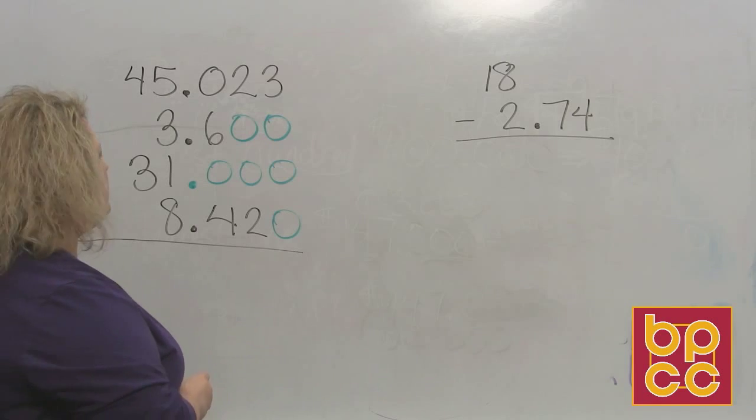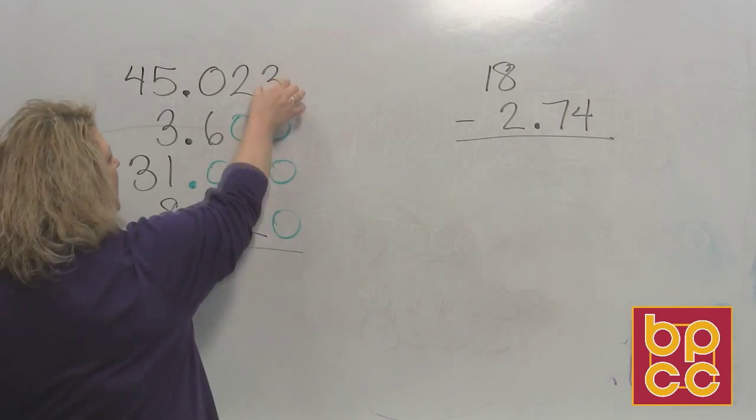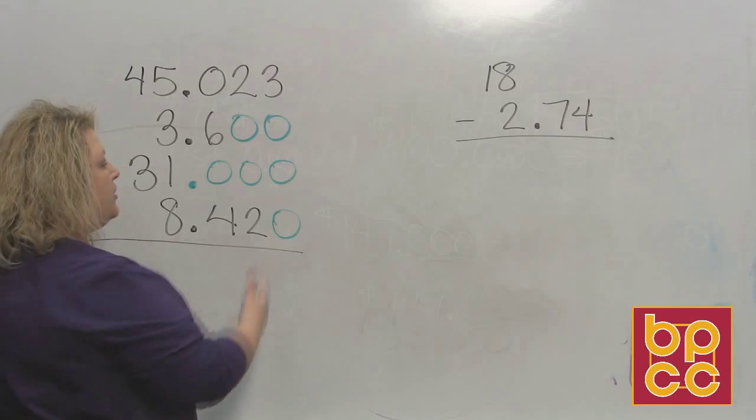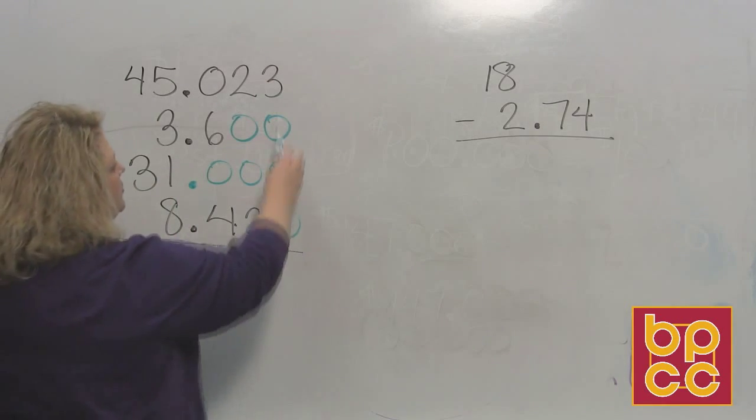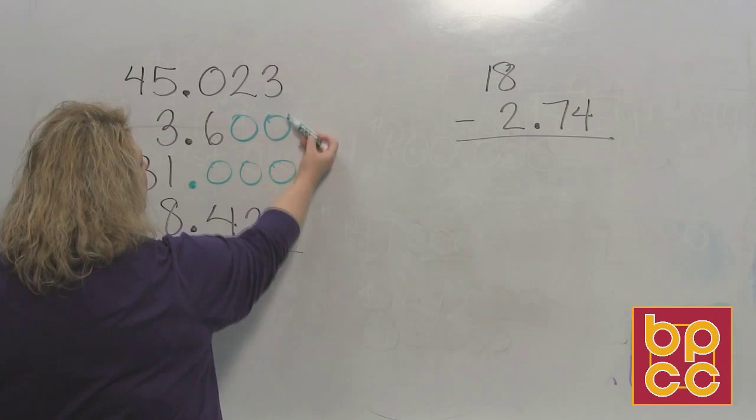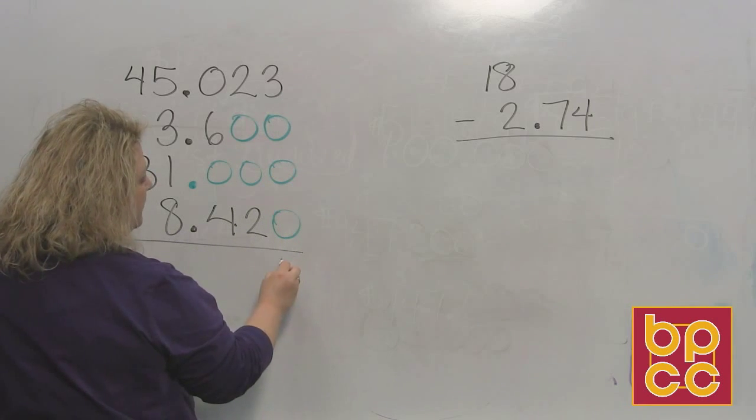Now, once you get all your placeholders done, then you just want to add columns. And remember, when you do addition, you start from the right and you move to the left. So when I start on the right, I have the number three with nothing added. So that's a three.